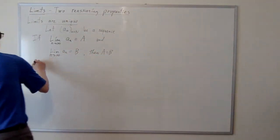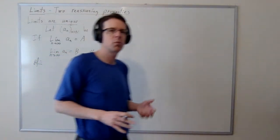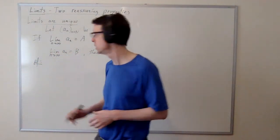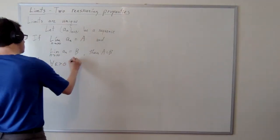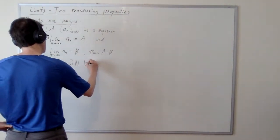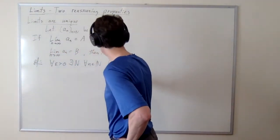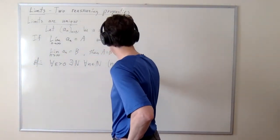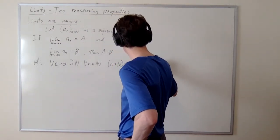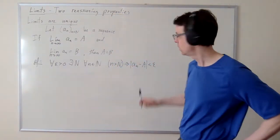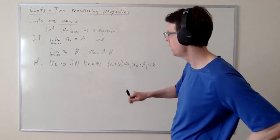So how do we prove this? Like all of these basic proofs, we begin with the definition of a limit. The definition says: for all positive epsilon, there exists a cap N such that for every natural number n, if n exceeds cap N, then |a_n − a| < epsilon. This is what we know about the convergence of a_n to a.